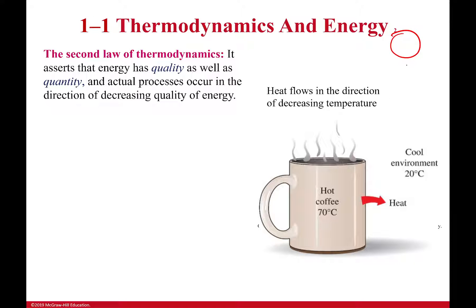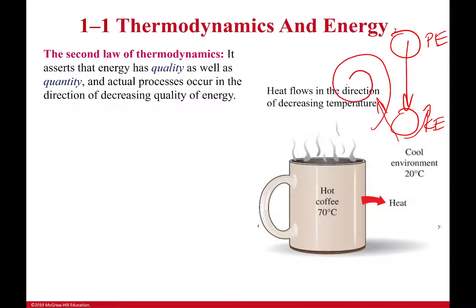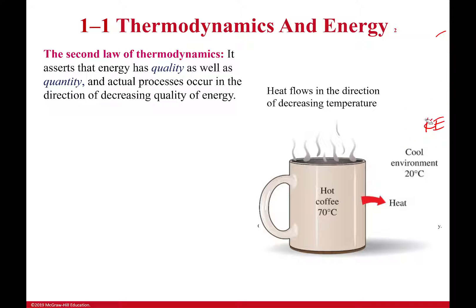Like the rock we had earlier — it had full potential energy, then some kinetic energy, transferring. But some of that is being lost into other forms: it's causing the air to swirl around, which is not useful. The rock itself is getting hotter through friction, which is also not useful. If it's not useful, that's lower quality energy. It's going to lower quality.